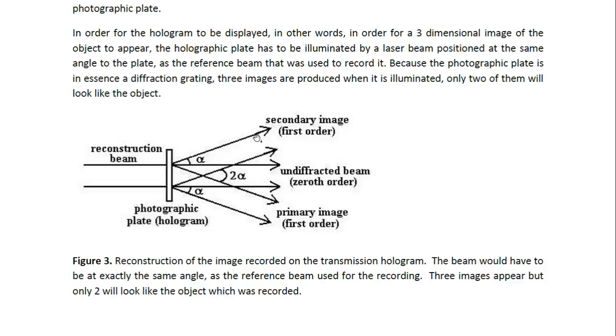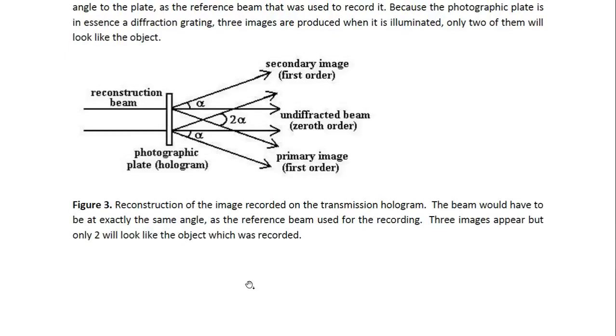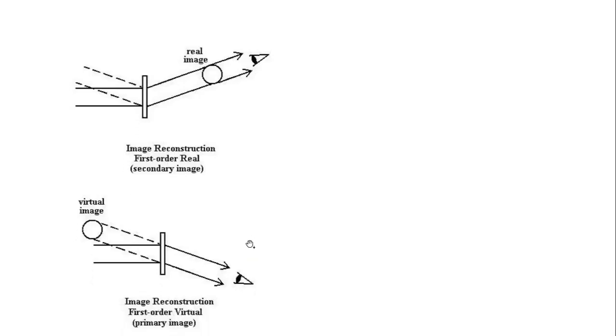And depending on where the observer is, they will see the image that is produced by this diffraction pattern. And it is the first order images that the observer will see. There will be second order images but they will be faint.